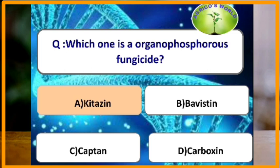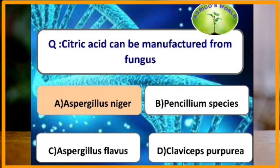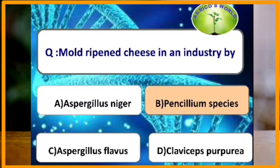Which is an organophosphorus fungicide? Organophosphorus fungicides include iprobenphos and edifenphos. In the options, Kitazin is iprobenphos. Citric acid can be manufactured from which fungus? Citric acid is manufactured from Aspergillus niger.